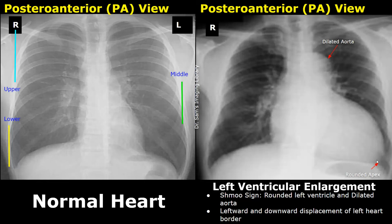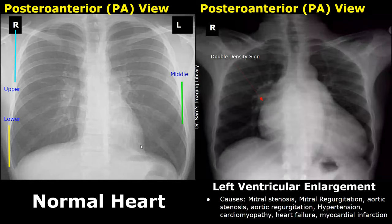Whereas in the normal image the apex is not rounded and is not displaced towards the left or downwards. Causes of left ventricular enlargement include mitral stenosis, mitral regurgitation, aortic stenosis, aortic regurgitation, hypertension, cardiomyopathy, heart failure, and myocardial infarction.